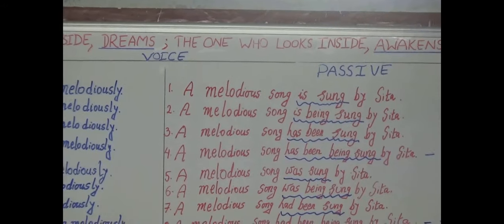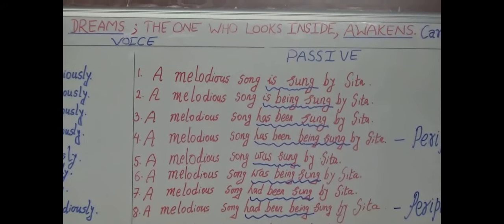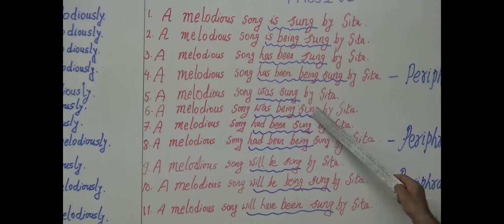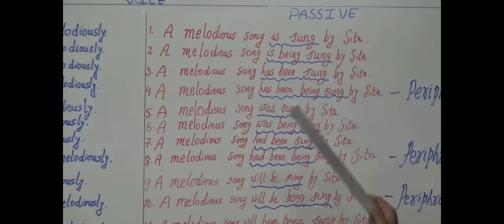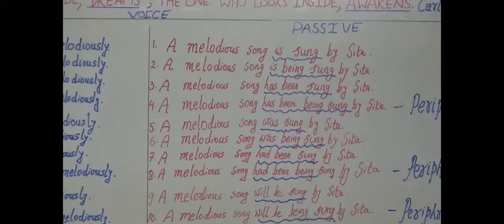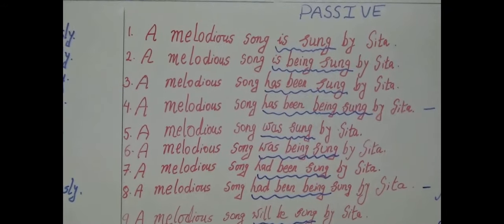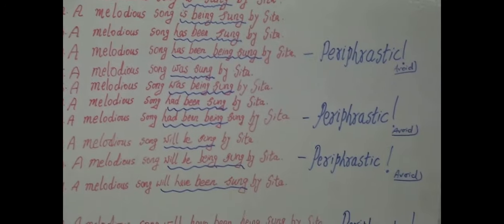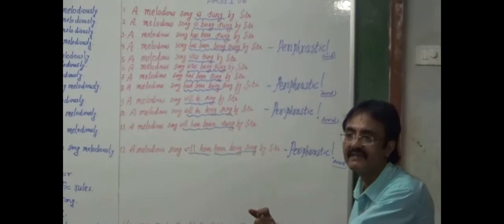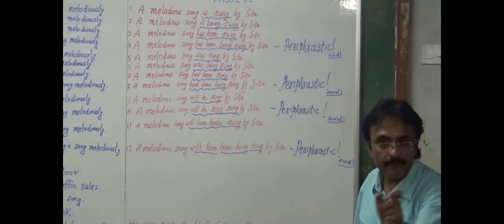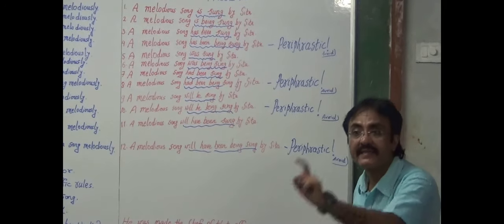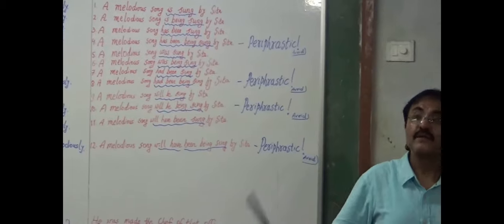If you notice, all the passive structures carry the third form (V3). There are two different types of words: regular and irregular. The regular ones carry the ED form — carry, play, kick — they take ED form. They are very simple, regular ones.